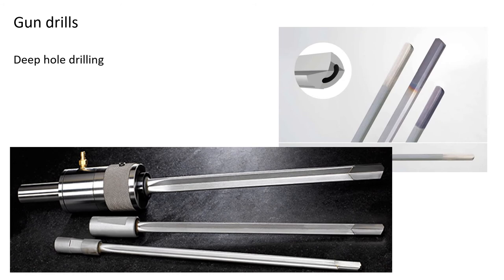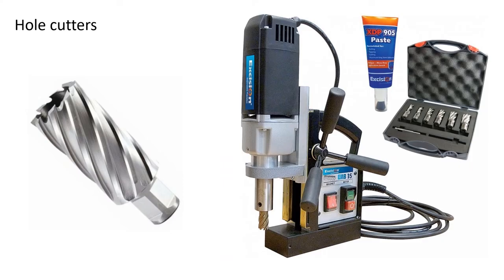Gun drills are used for deep hole drilling. They are straight-fluted drills that allow cutting fluid to be injected through the drill's hollow body to the cutting face. They achieve a depth-to-diameter ratio of typically 300:1 or more, and are constructed from a hollow alloy tube with a brazed carbide head — indexable insert versions are also available. Hole cutters, also called annular cutters or rotobroaches, are used to produce holes in situ on items like I-beams on construction sites, mounted on a portable magnetic drill. The annular cutter produces a slug similar to a hole saw, which is ejected when the cutter is withdrawn.